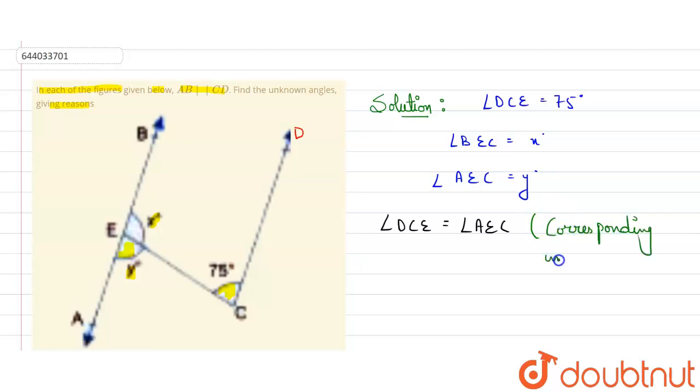So corresponding interior angles of two parallel lines are always equal. Reason is corresponding interior angles. So from here we can calculate the value of y. Value of y will be equal to angle DCE, that is 75 degrees.